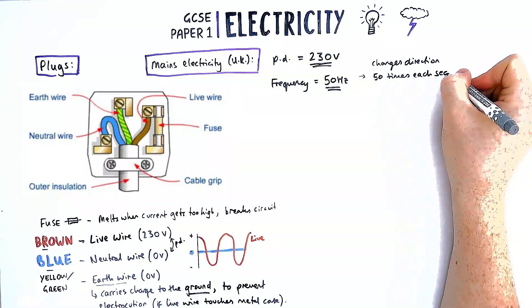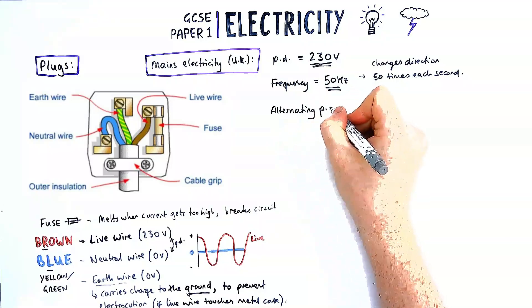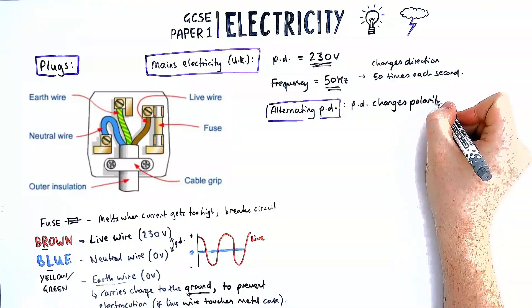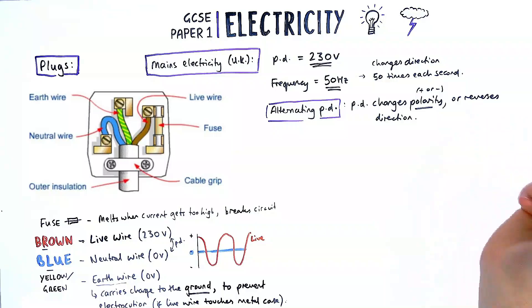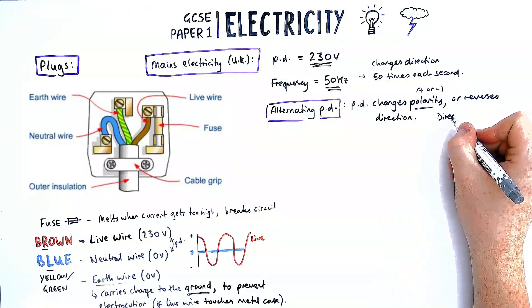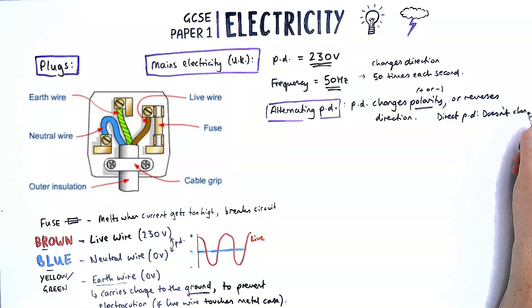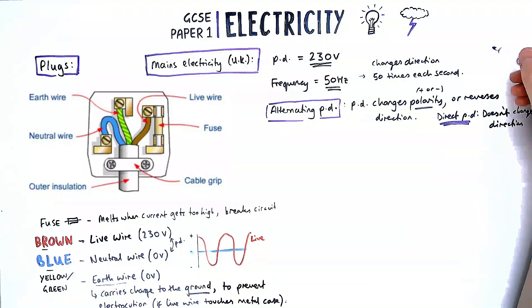This happens because it uses something called alternating potential difference. Potential difference that alternates means it changes polarity or reverses direction. Polarity just means going positive to negative or back. Direct potential difference doesn't change direction. Be careful, in the AQA specification it does only talk about alternating PD, not alternating current, so it will ask about alternating PD.